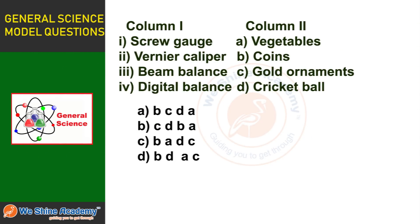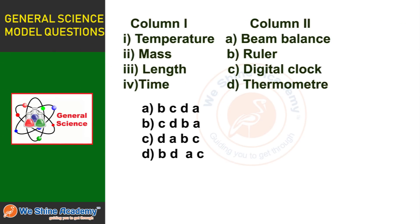The next question is: Match the following. 1: Screw gauge, 2: Vernier caliper, 3: Beam balance, 4: Digital balance. The answer is: 1-B (Screw gauge — Coins), 2 (Vernier caliper — Cricket ball), 3-A (Beam balance — Vegetables), 4-C (Digital balance — Gold ornaments).